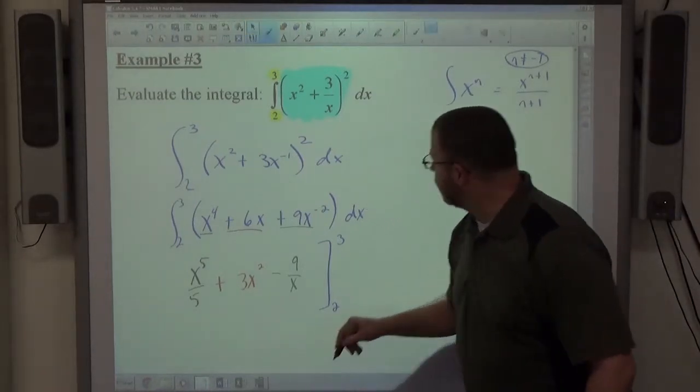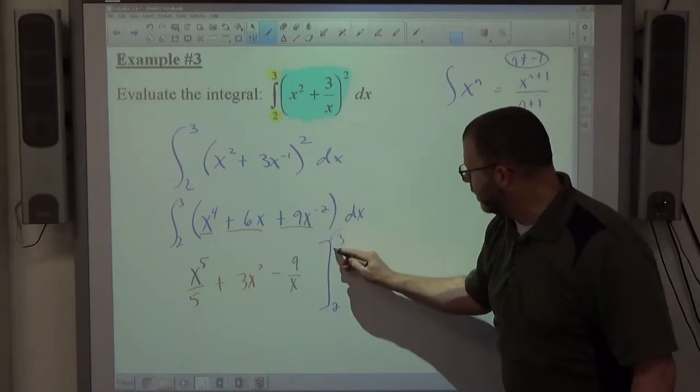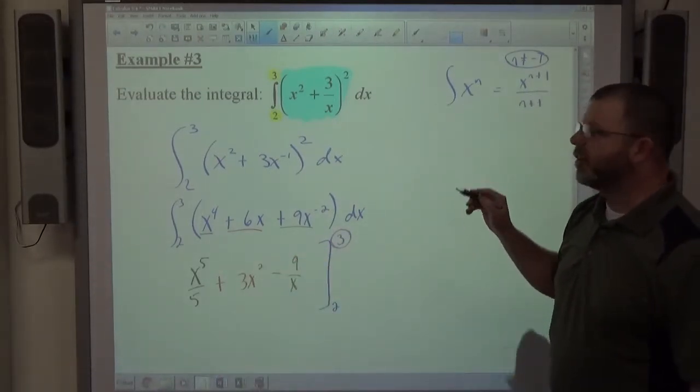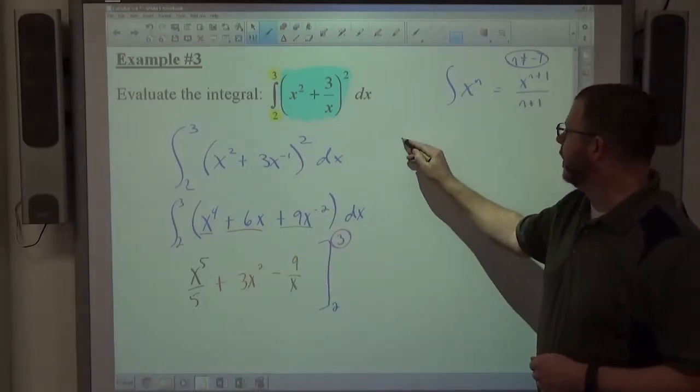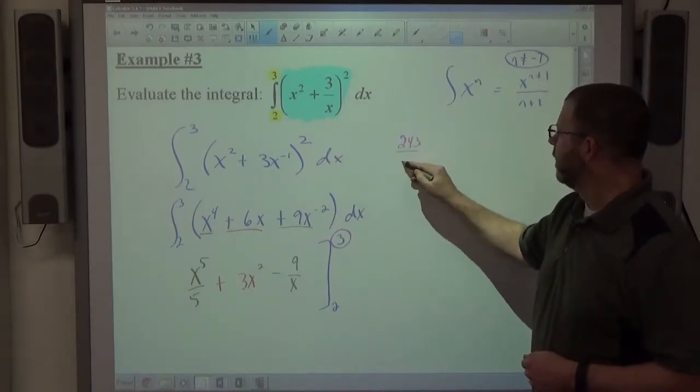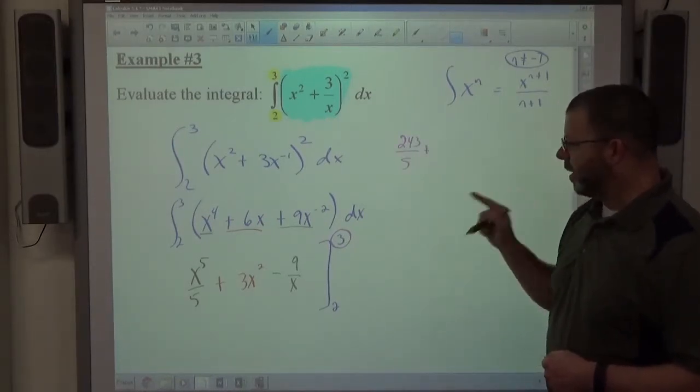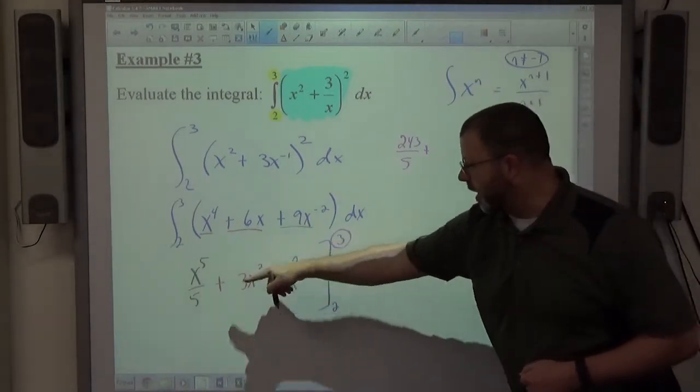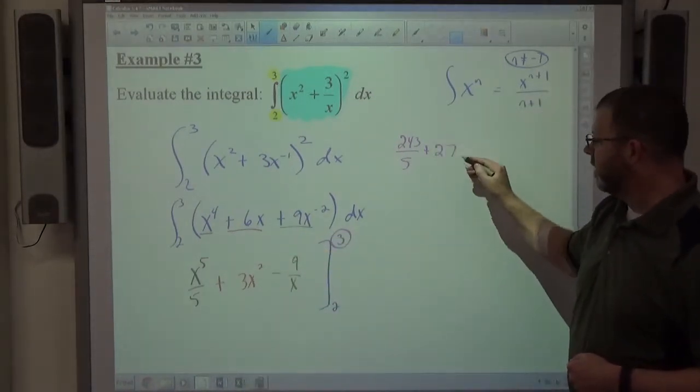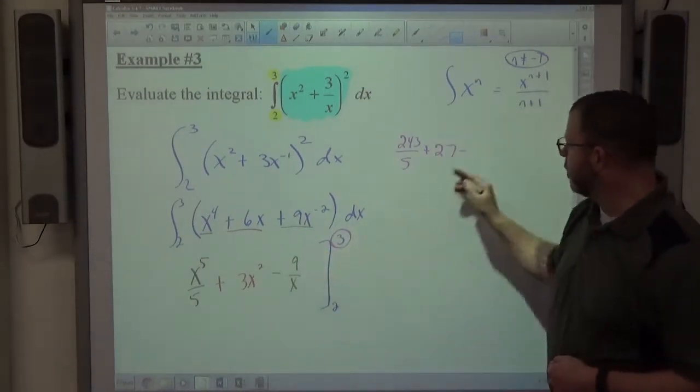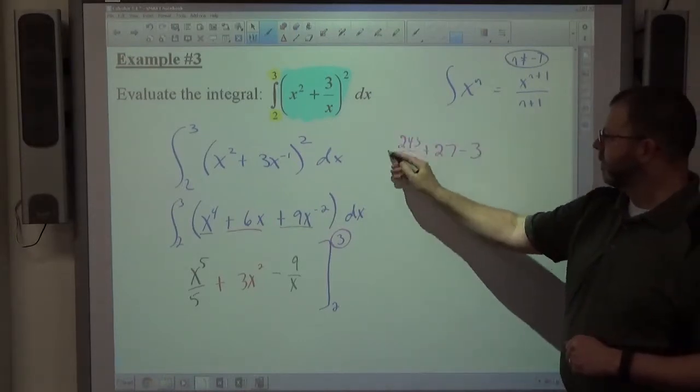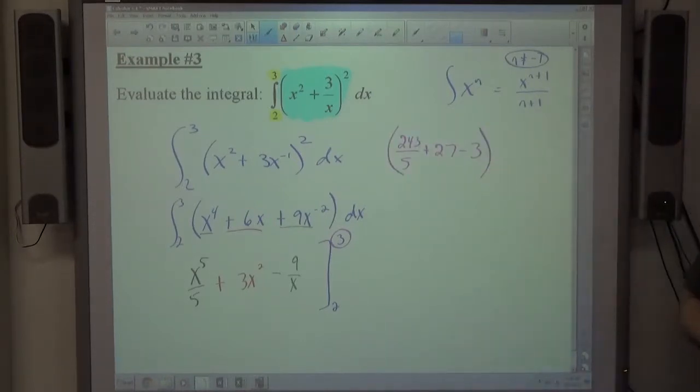So first I want to substitute the number 3 in to this expression. So we have 3 to the fifth power, which is 243 over 5, plus 3 times 3 squared. 3 squared is 9, times 3 is 27, minus 9 divided by 3, which is just 3. So I just substituted 3 for all the x's, and I end up with those 3 values.